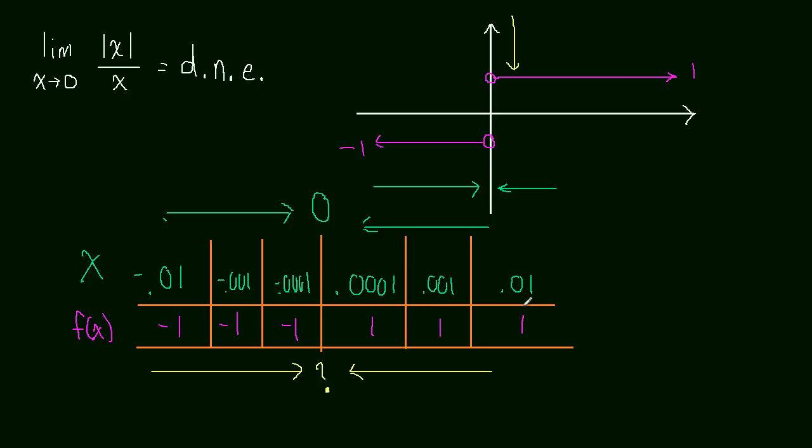If f of x, as we get closer to the number, in our case it was 0, if we get closer to 0 and f of x doesn't get closer to only one number, then the limit doesn't exist. See you in the next video.